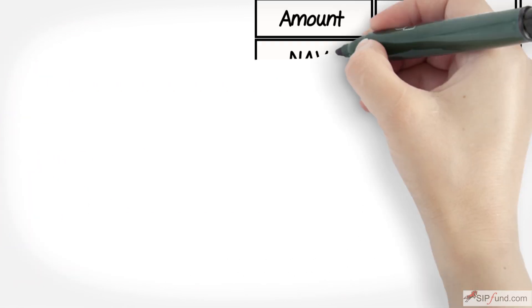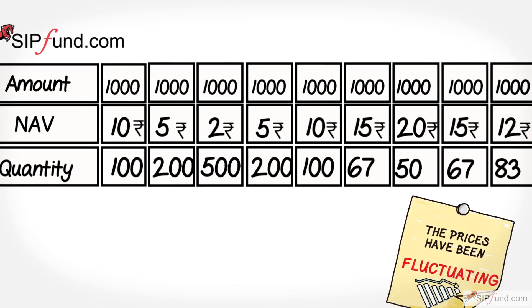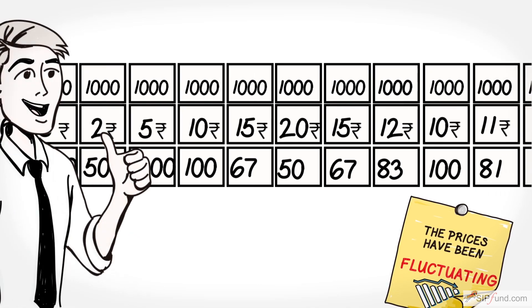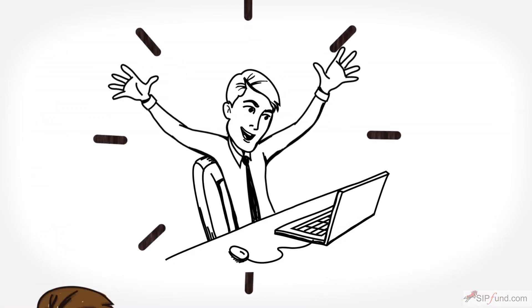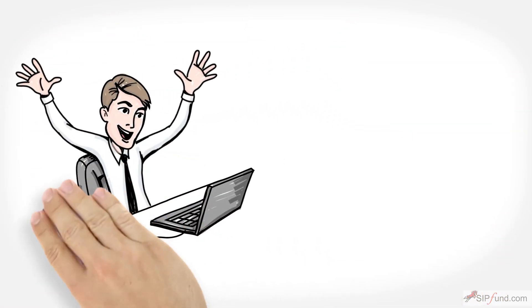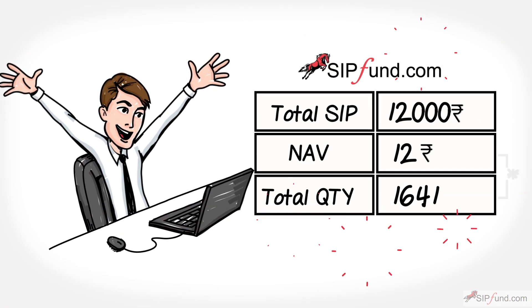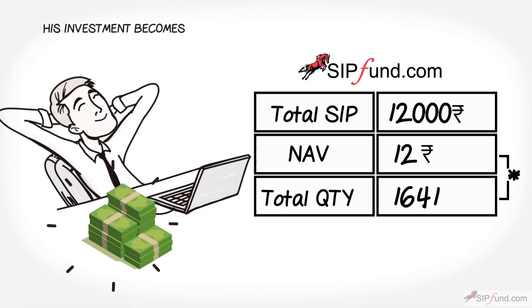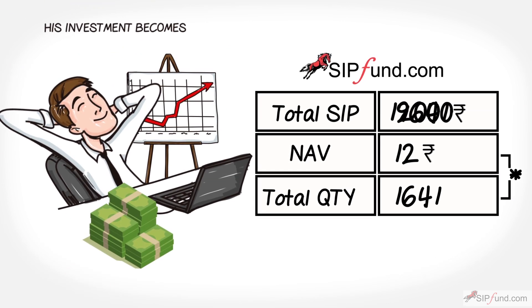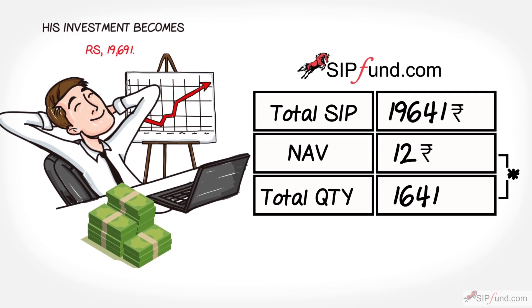If Rahul does this for 12 months and the prices have been fluctuating, he can accumulate 1,641 units and his investment becomes rupees 19,691.